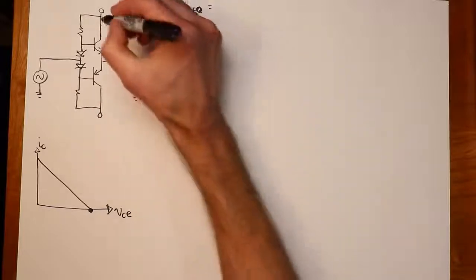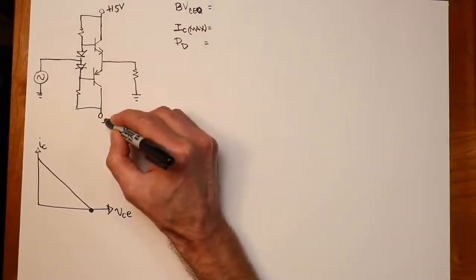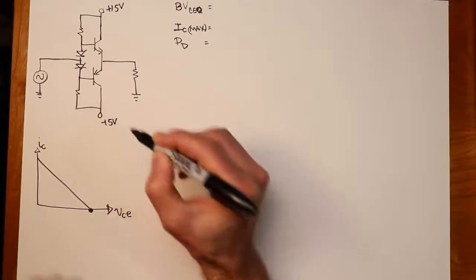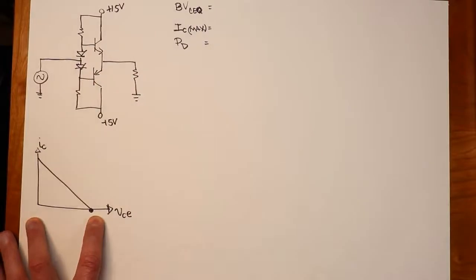So if, for example, we had 15 volts here, and minus 15 volts here, we would say, okay, that's 15 volts. That's my VCEQ. So you might think that's the maximum.